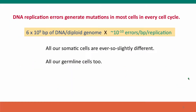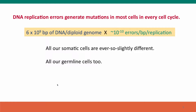Now let's think about the consequences of this for mutations. We have 6×10⁹ base pairs, and the mutation rate is — depending on how we calculate it — maybe 10⁻⁹ to 10⁻¹⁰ errors per base pair per replication. This means that all of our cells have new mutations — all our somatic cells have mutations and all our germline cells have mutations. For now, I just want to think briefly about mutations in germline cells.